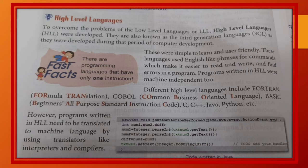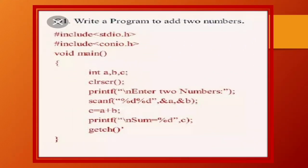Next is high-level languages. To overcome the problem of the low-level languages, high-level languages were developed. They were simple to learn and user-friendly. These languages used English-like words for commands, which make it easier to read and write and find errors in a program. Programs written in high-level language are machine independent too. Means, is language me program ko English-like words me likha jata hai. Jo, jinhe padhne aur likhne me bohut asan hi hoti hai. Isme errors ka bhi pata chal jata hai. Aur, ye program har ek machine per easily run ho jate hain.